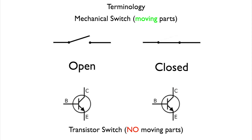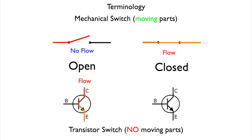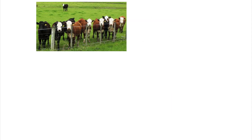Now let's add some color. You have flow, and you have no flow — flow and no flow. The flow waits at the gate. Let me illustrate this a little bit differently. Cattle wait inside a fenced-in area that has a gate, until someone opens that gate.